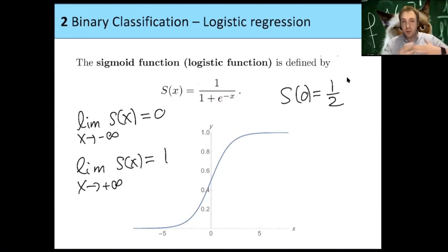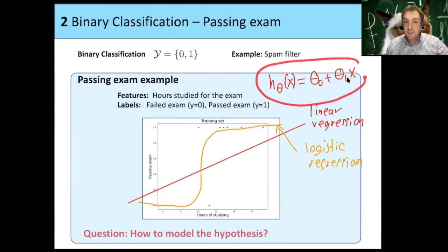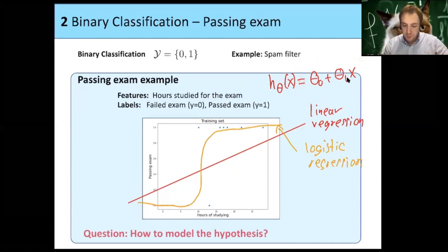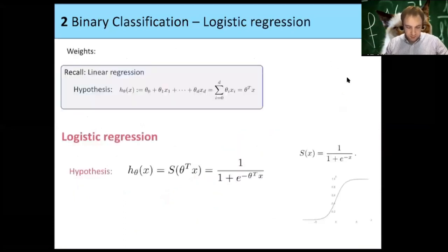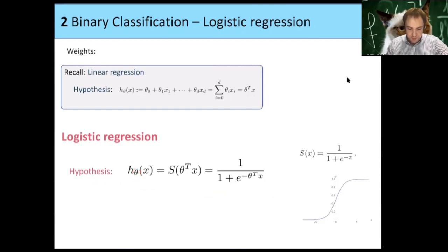We want to use and stretch this function to describe our data. To do this, we use the same hypothesis as before but plug this linear function into the sigmoid function. With the two parameters theta_0 and theta_1, we can stretch it wider or move it left or right. So the model for our logistic regression hypothesis h_theta is just the linear regression hypothesis plugged into the logistic function.